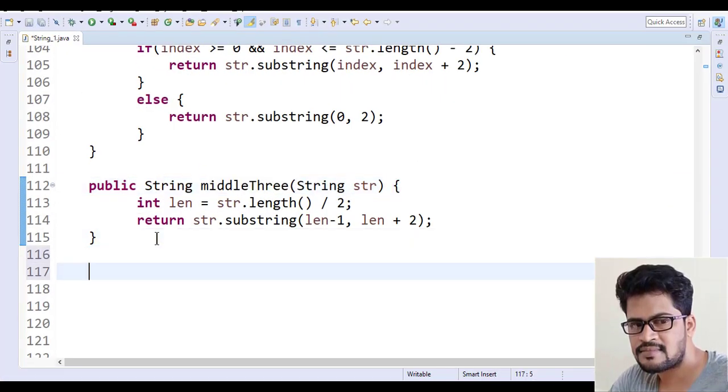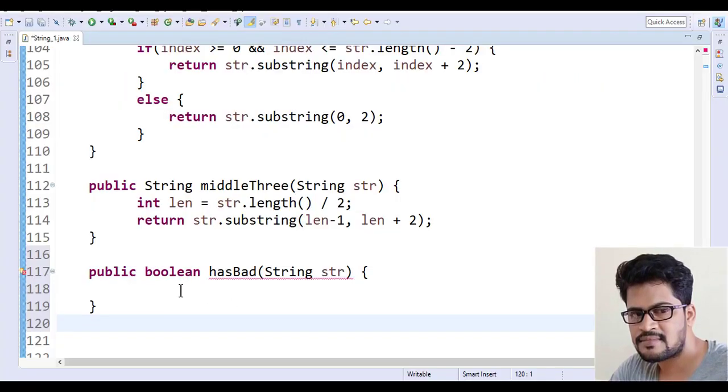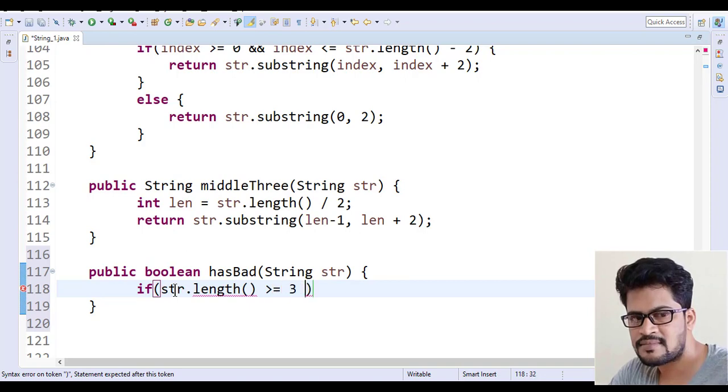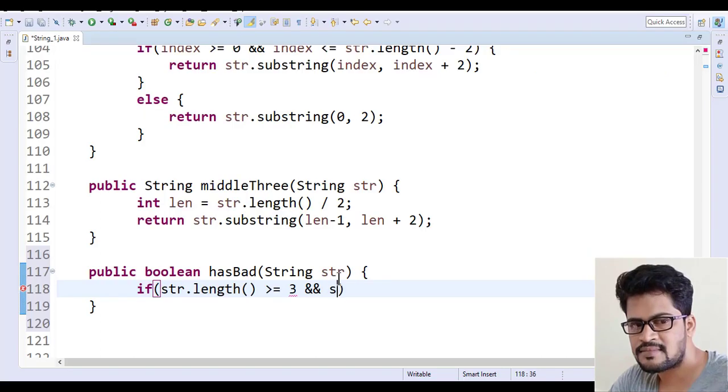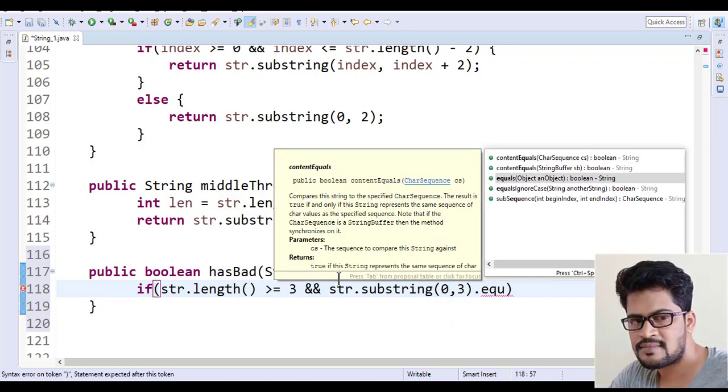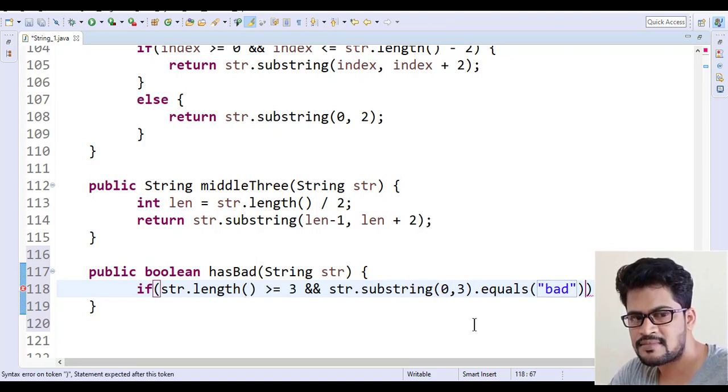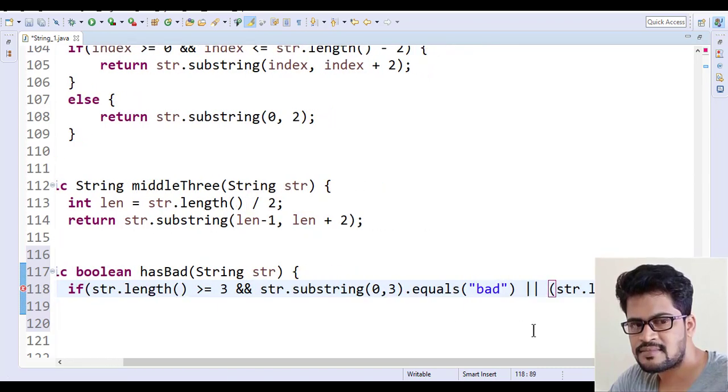Here you have to check the length. If str.length() is greater than or equal to 3, and the next one you have to check is index 0 to 3, so str.substring(0, 3).equals("bad"). So length is minimum three characters and the first three characters equal to 'bad'.